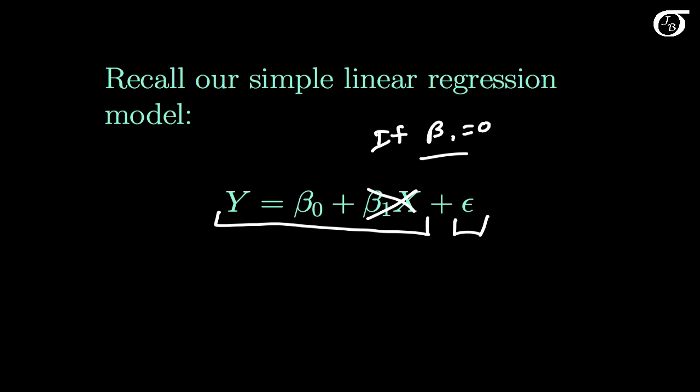Now beta 1 is a parameter and we do not know its value, and so we estimate it. We estimate it with beta 1 hat. So beta 1 hat estimates beta 1. Beta 1 hat is a statistic that estimates the parameter beta 1. And we usually use the method of least squares to estimate beta 1. And if we do that, then our beta 1 hat is equal to the sum of products of x and y over the sum of squares for x. And I look at that in much more detail in another video.